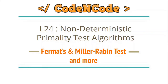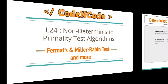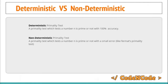Hello guys, this is Code and Code, and this is the 24th lecture of the Number Theory series. It's been a while since we've had any lecture from the Number Theory series, so we are going to start it. I'll be posting three or four lectures regarding primality testing, but this time we'll be going with non-deterministic primality test algorithms. Previously we have already studied one algorithm that tests whether a given number N is prime or not in square root of N time. That algorithm is deterministic, and we'll be seeing the difference between deterministic and non-deterministic primality test algorithms in a moment.